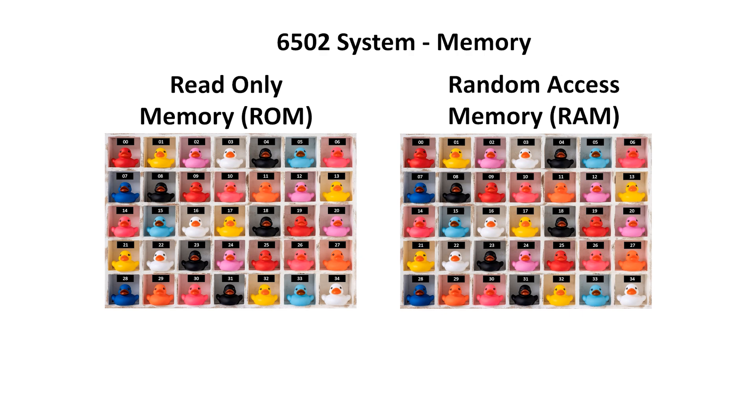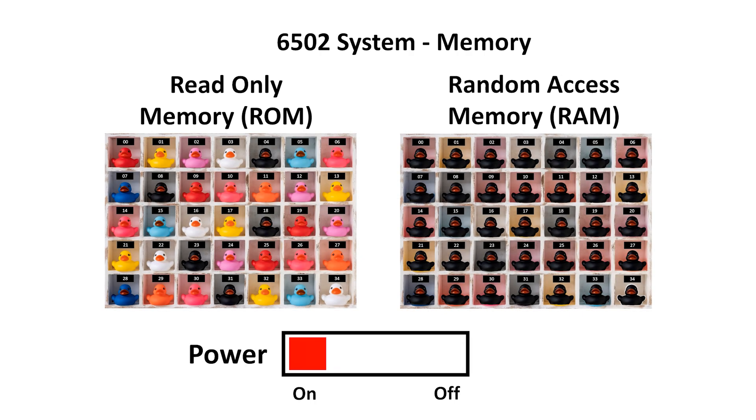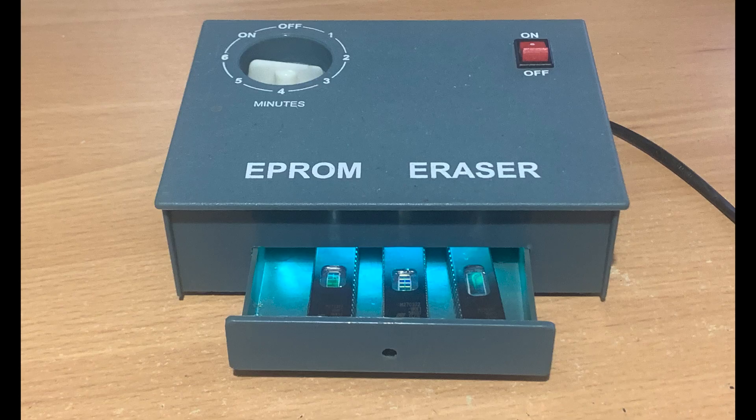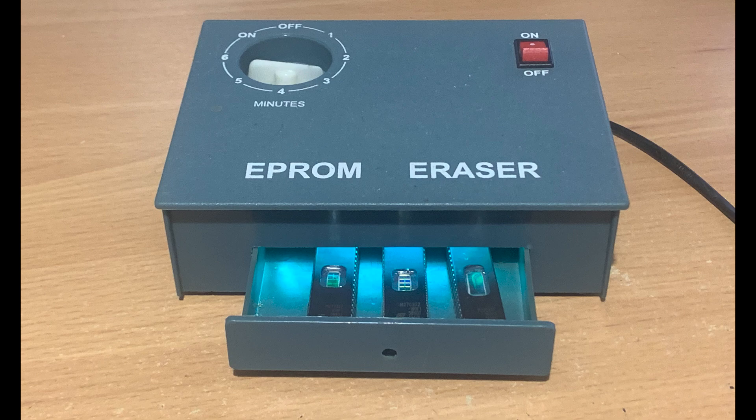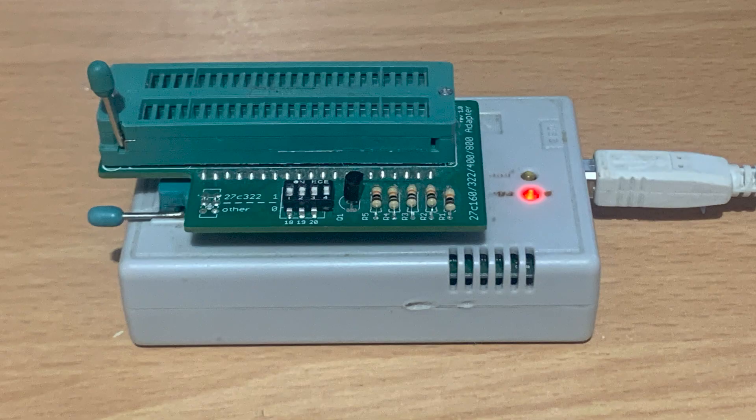EEPROM stands for Erasable Programmable Read-Only Memory. It can store information permanently, but unlike regular RAM, the data remains even when the power is off. To erase the EEPROM, we use a UV light eraser, and to program it, we need a special tool connected to the computer. But in normal operation, the stored information can't be changed. It's fixed, just like the rules in our rulebook.